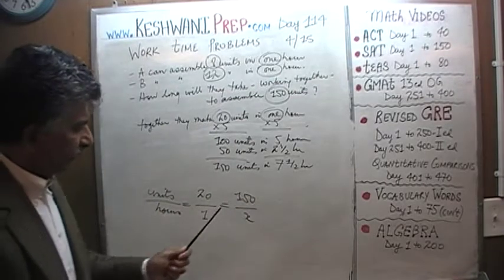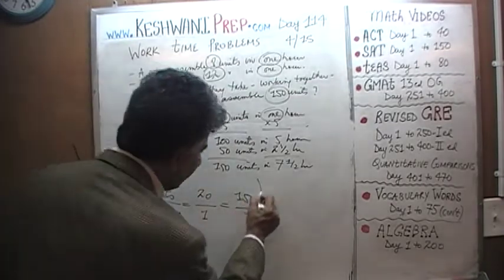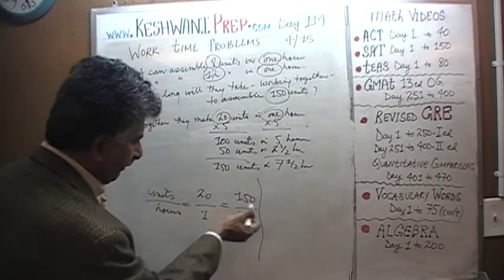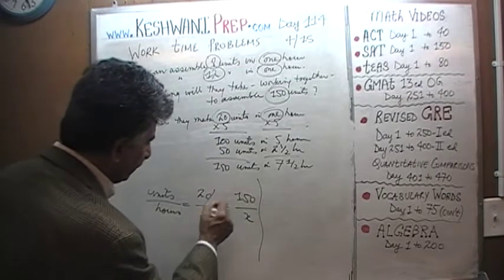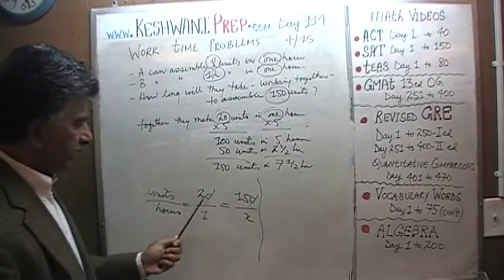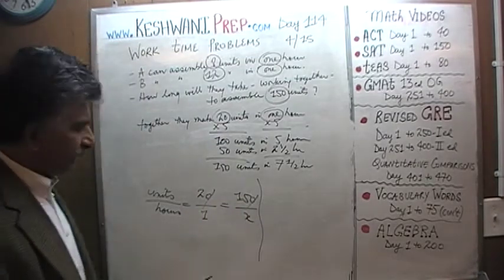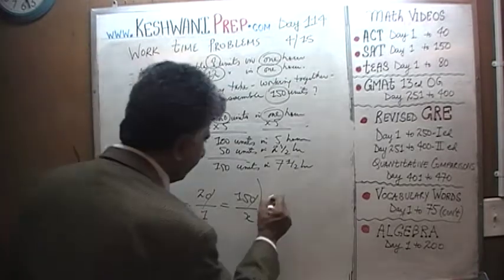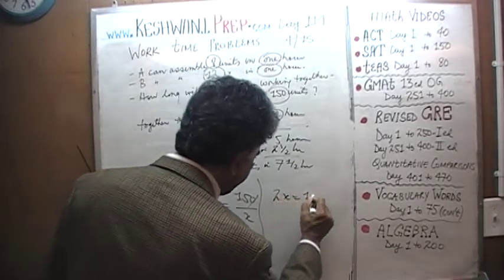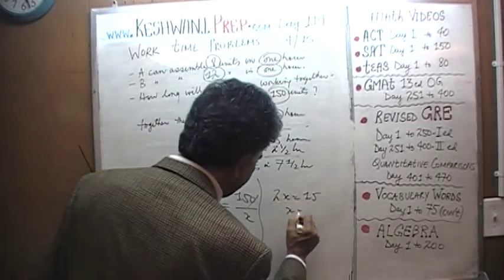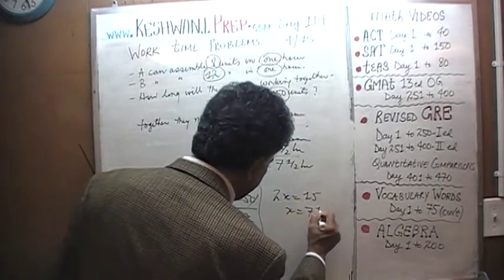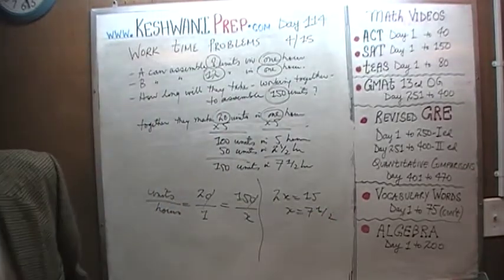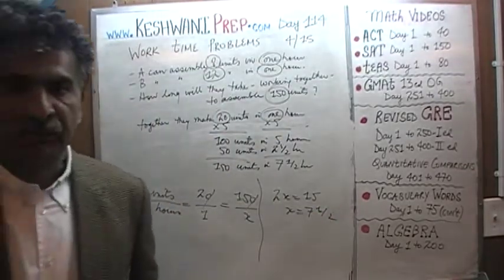Then simply solve for x. 20x equals 150. We can divide both sides by 10 — zero drops out — so 2x equals 15, and x equals seven and a half. Easy method, pretty straightforward, very simple.